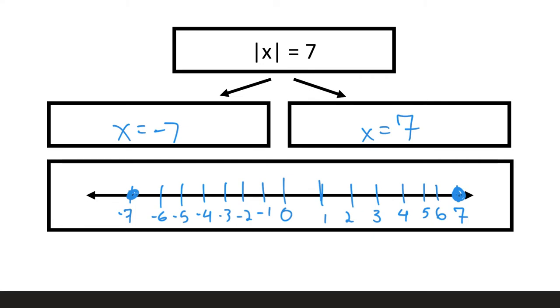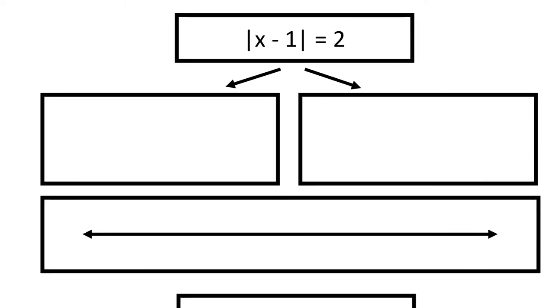So pretty simple. x is negative 7, x is positive 7. Close circles at both those points. Going to the inside of this sheet.